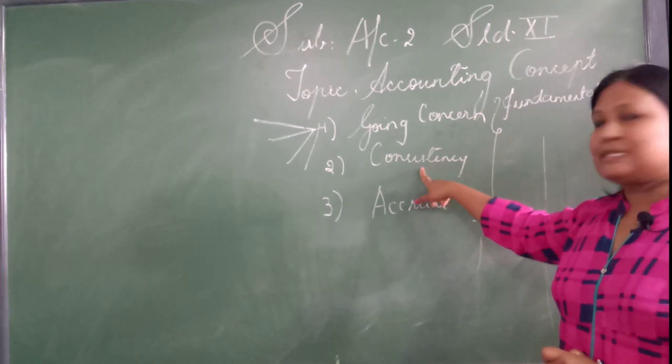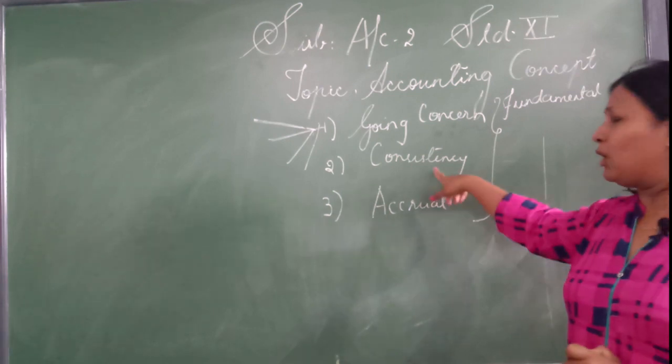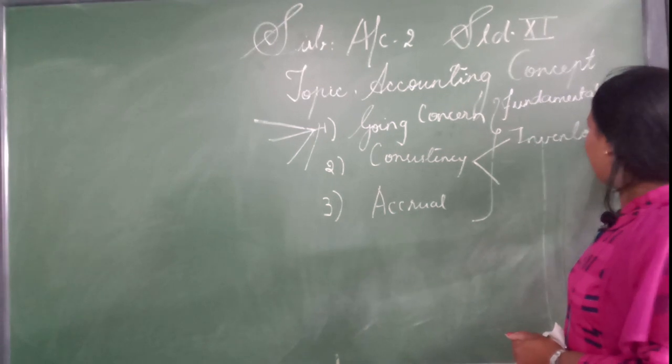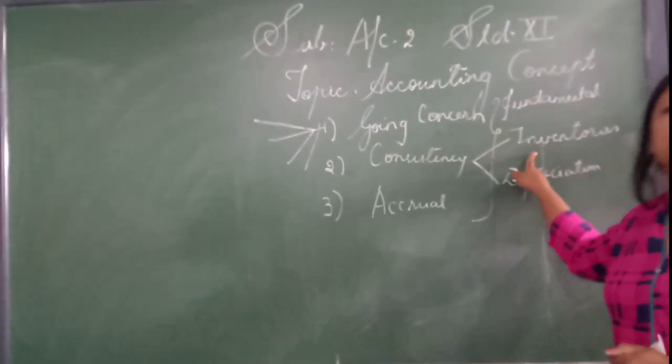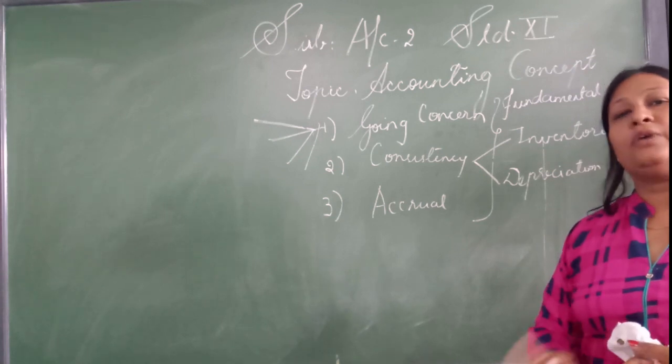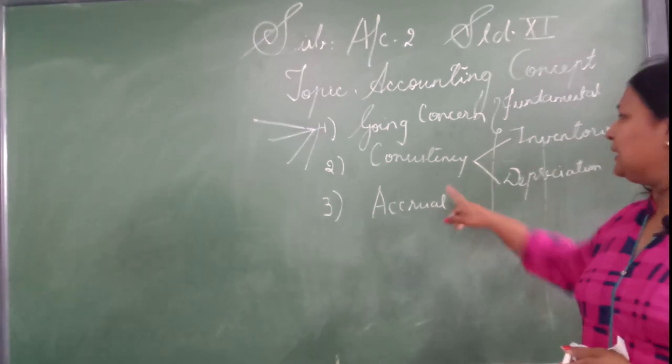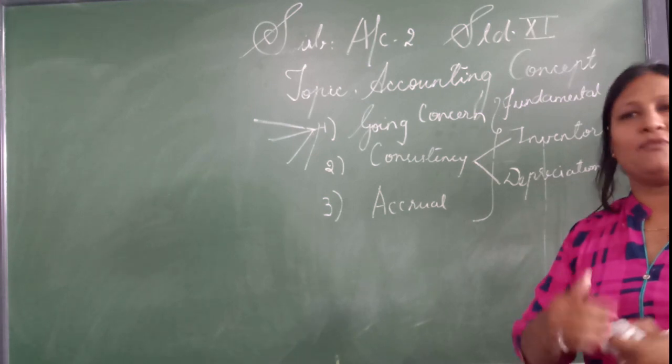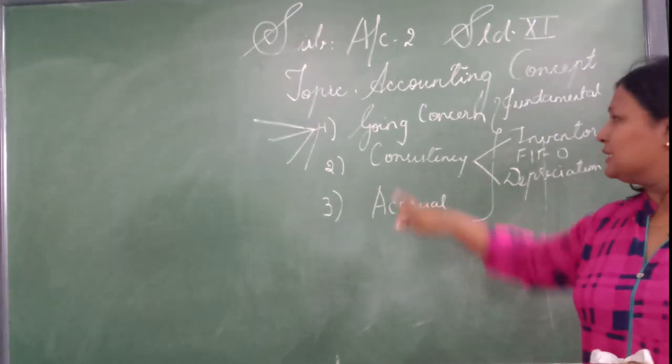Now we will move to the next one, that is consistency. As the name suggests, consistency means something consistent. Every time we do in the same manner, that is called consistency. Where basically this concept is applicable in case of calculating your inventories and other one in case of calculating your depreciation. What do we mean by inventories? Inventories means closing stock. Whenever we calculate closing stock, there are ample of methods available. We can go by FIFO, we can go by LIFO, we can go by weighted average method. But which method will apply based on assumption of our industry. But whatever method you apply, you have to apply it consistently. Suppose I am applying FIFO, that is first in first out. So every year for the stock I will apply the method FIFO. Or if I have taken LIFO, I have to go with LIFO every year. So this is called consistency.